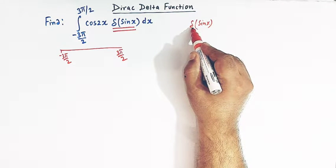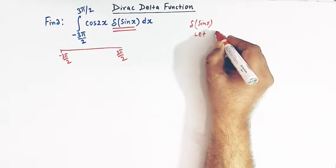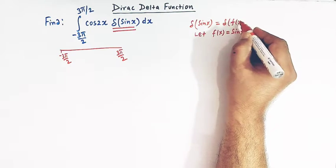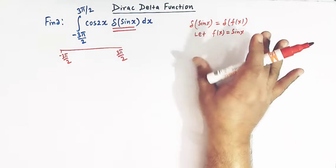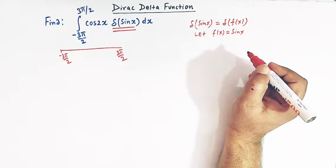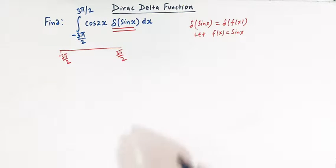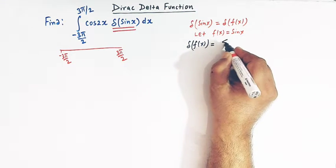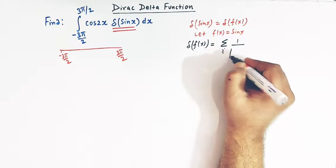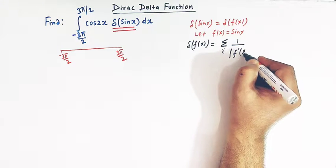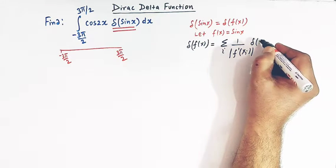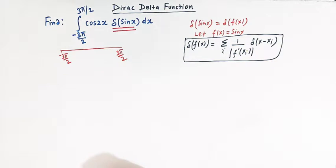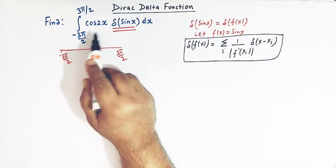Here we have delta of sine x. So let us take f of x equal to sine x, so that delta of sine x becomes delta of f of x. Now I will mention the important property of Dirac delta function which says that delta of f of x is given by the summation of 1 over the absolute value of f prime of x_i, times delta of x minus x_i.